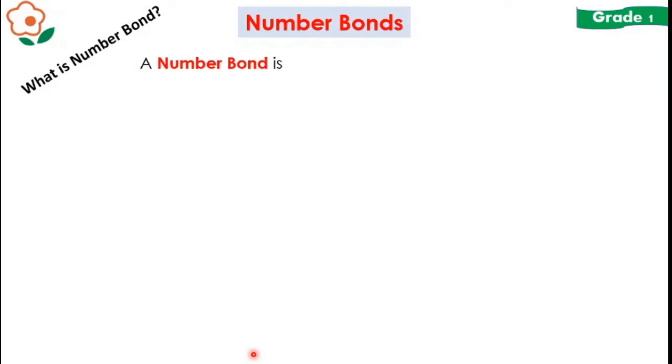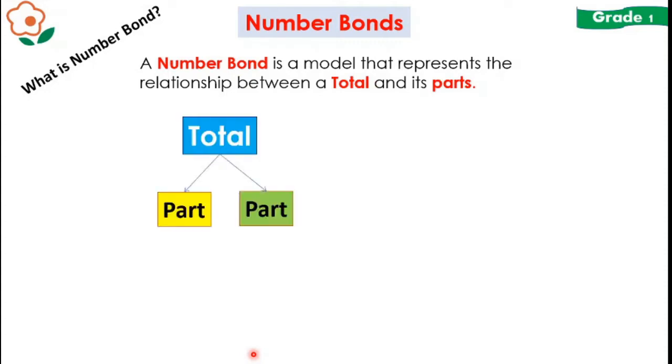A number bond is a model that represents the relationship between a total and its parts. It consists of three boxes. The top box is for the total and two boxes represent the parts.